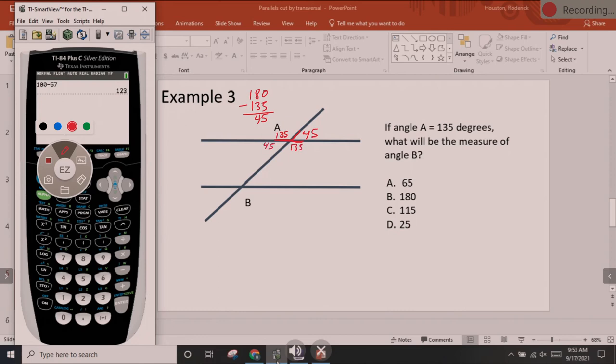This one is 135. This one is 45. This is 135, 45, 45, 135. So we know that B is 135. And I don't see that as an answer choice. Maybe it should have been C. There it is.